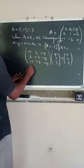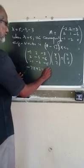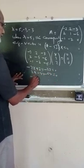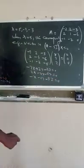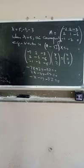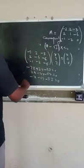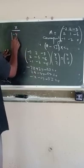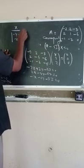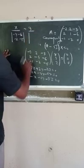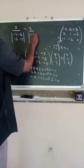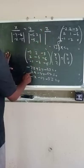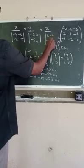That gives us the system: minus 7x plus 2y minus 3z equal to 0; 2x minus 4y minus 6z equal to 0; minus x minus 2y minus 5z equal to 0. To solve this system of equations by using the cross multiplication rule, we choose the last two equations: x by determinant of (minus 4, minus 2; minus 6, minus 5) equal to y by determinant of (2, minus 6; minus 1, minus 5) equal to z by determinant of (2, minus 4; minus 1, minus 2).